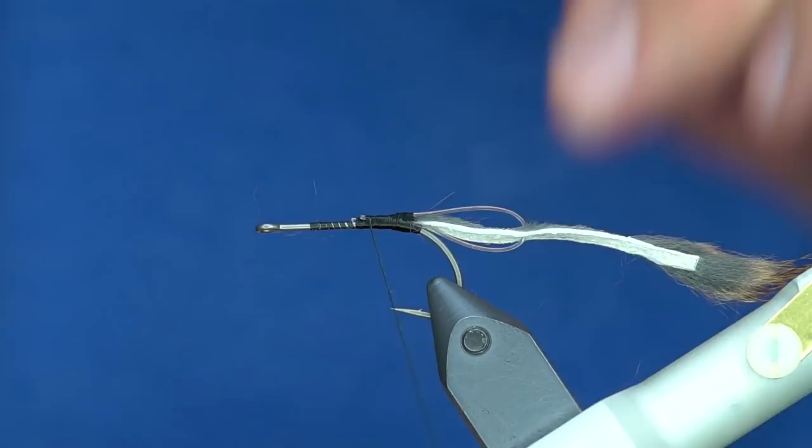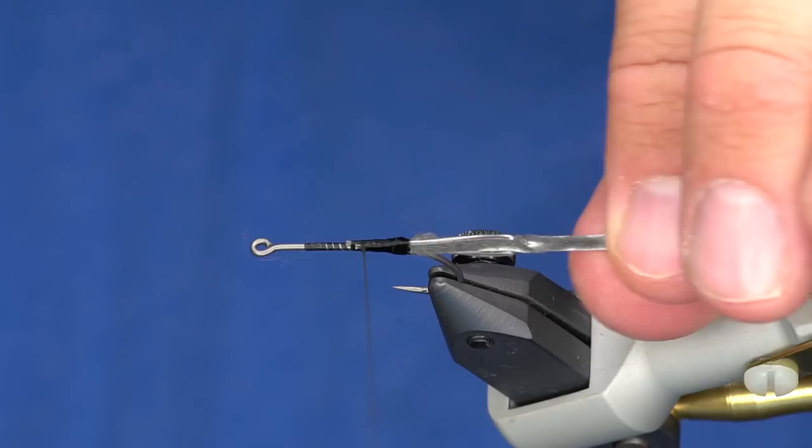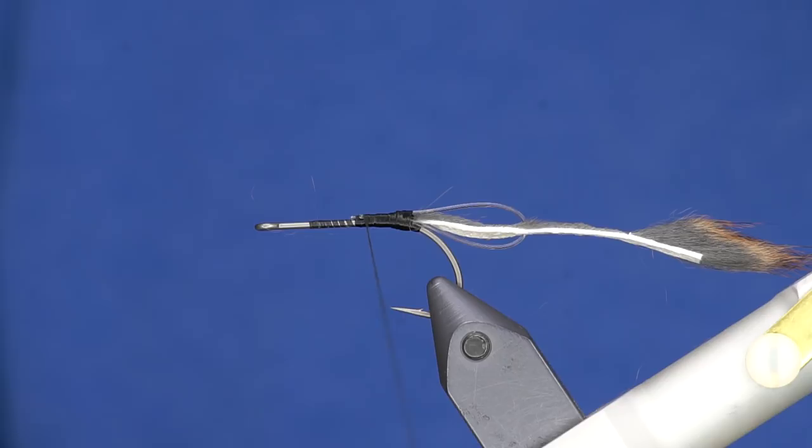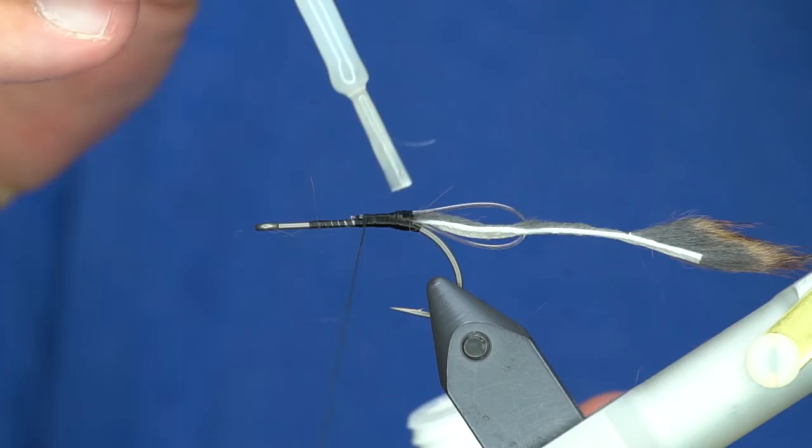You can cut this with your scissors, but if you like to keep your scissors nice you'll use flush cutters. So there's the tail, and this is a phenomenal way to keep your fly from fouling.